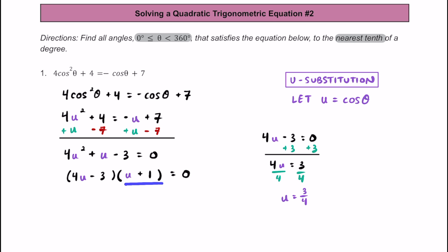Setting the other binomial equal to zero, we can say that u plus one equals zero. We take away one from both sides and find that u is equal to negative one. So going back to our equation, we found two solutions for u: u equals three fourths, and u equals negative one.